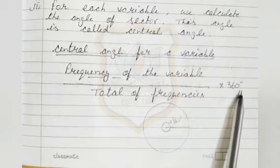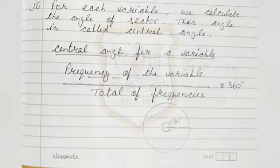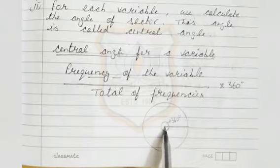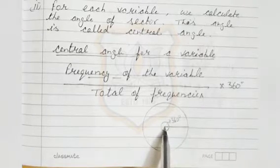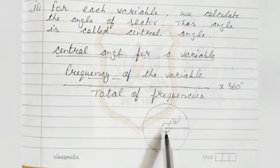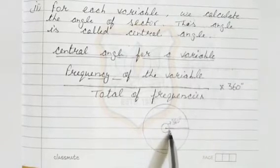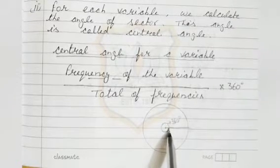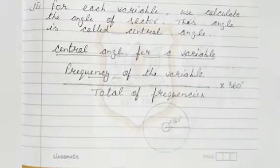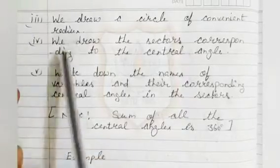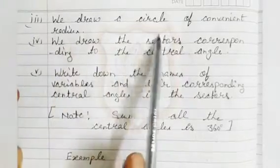The central angle for a variable is equal to the frequency of the variable divided by the total of frequencies, multiplied by 360 degrees. As you know, the total angle at the center of a circle is 360 degrees.